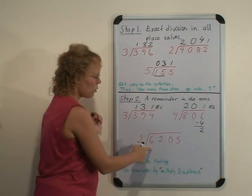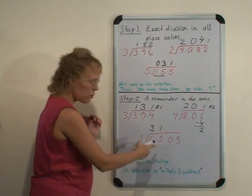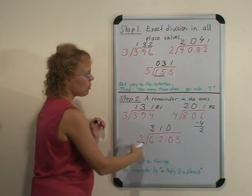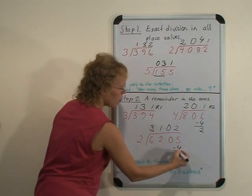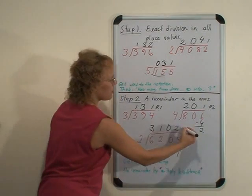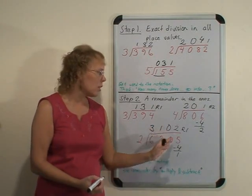And similarly here, 2 goes into 6 three times, 2 goes into 2 one time, 2 goes into 0 zero times, 2 goes into 5 two times. And now 2 times 2 is 4, and subtract that to find us the remainder. So the total answer here is 3,102 remainder 1.